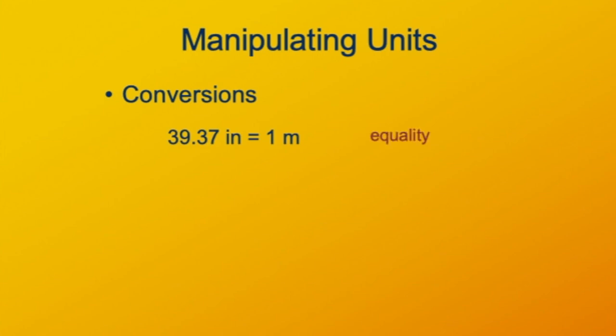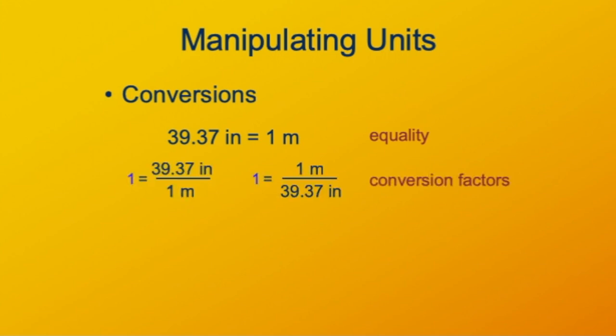Here I'll start with a simple example of converting between meters and inches. We start with the equality that 39.37 inches is the same thing as one meter. What's on one side of the equation is exactly the same as what's on the other side. From that, we can make two different conversion factors, both equal to one.